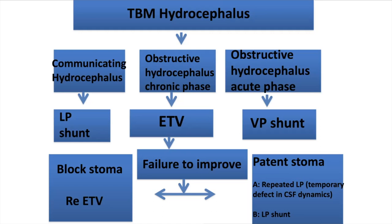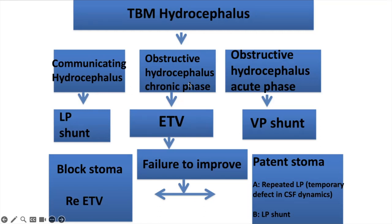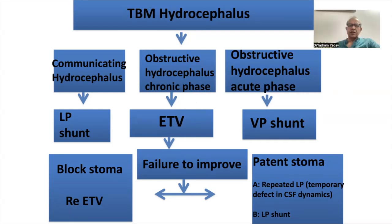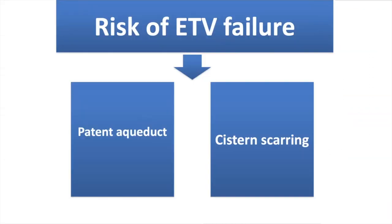Short comments about management of TBM hydrocephalus: there can be communicating hydrocephalus — treated with LP shunt; obstructive hydrocephalus in chronic phase — treated with ETV; or obstructive hydrocephalus in acute phase — treated with VP shunt, as ETV is demanding with a poor success rate in this setting. If there is a patent aqueduct and cisternal scarring, chances of ETV failure are higher.